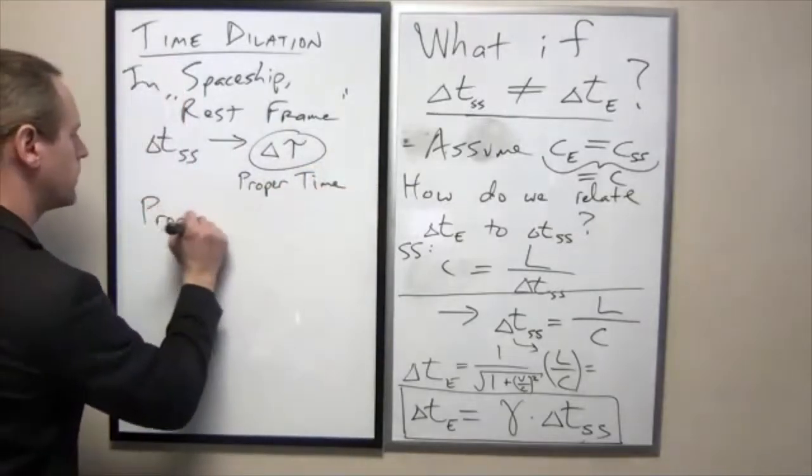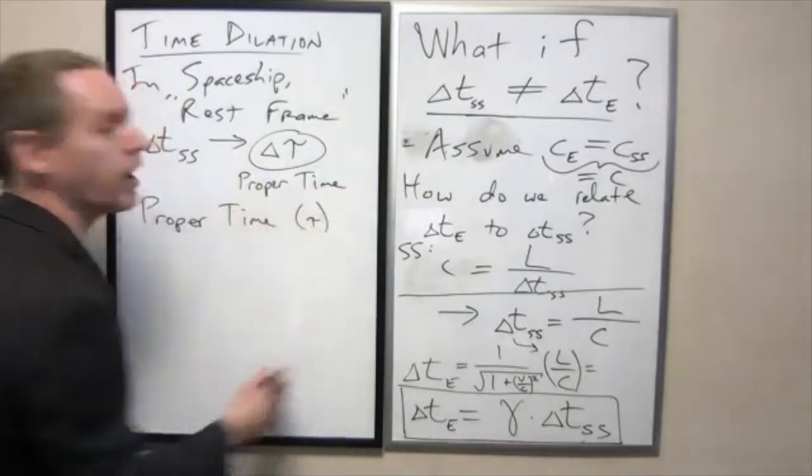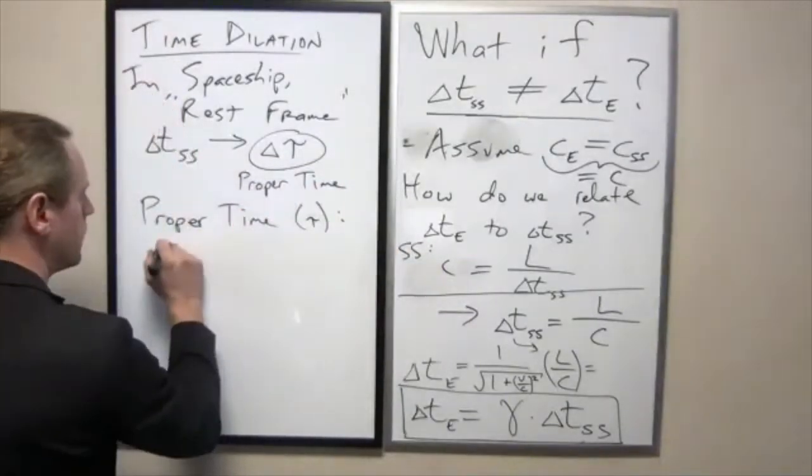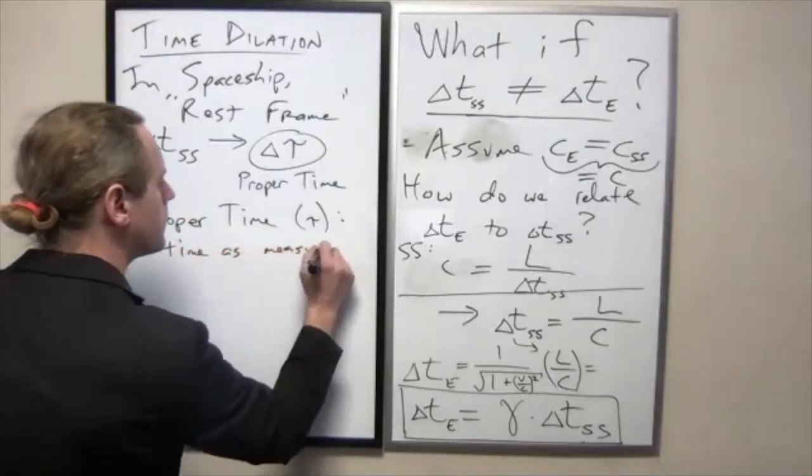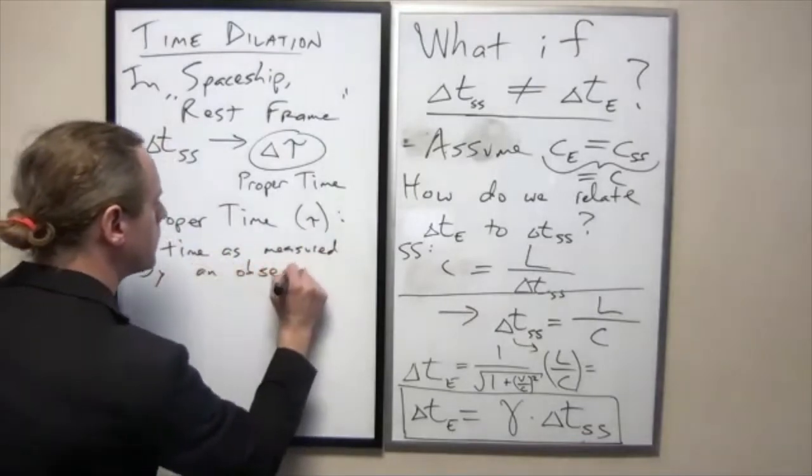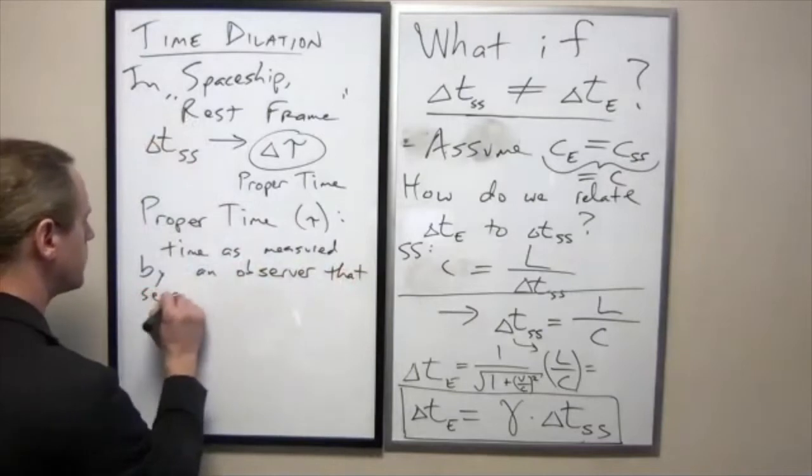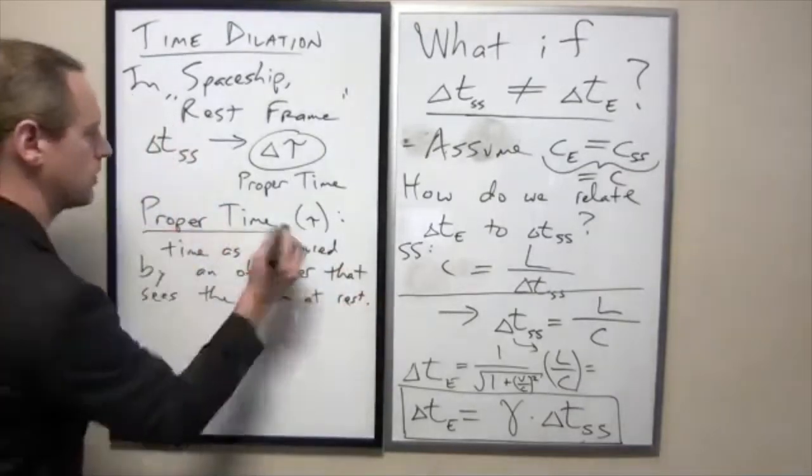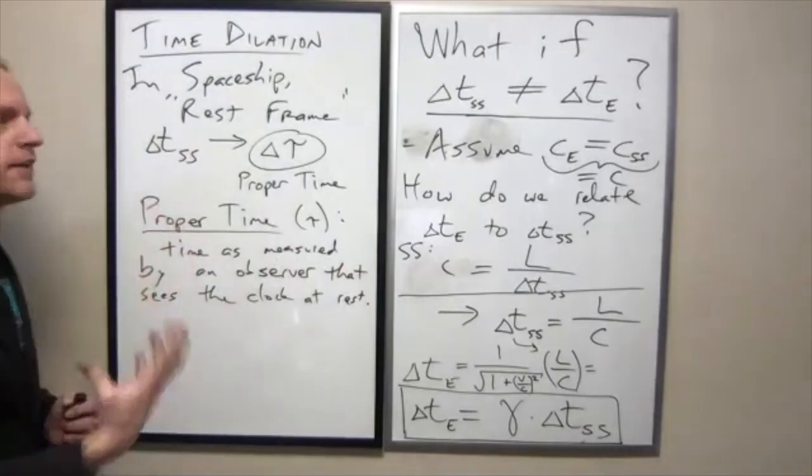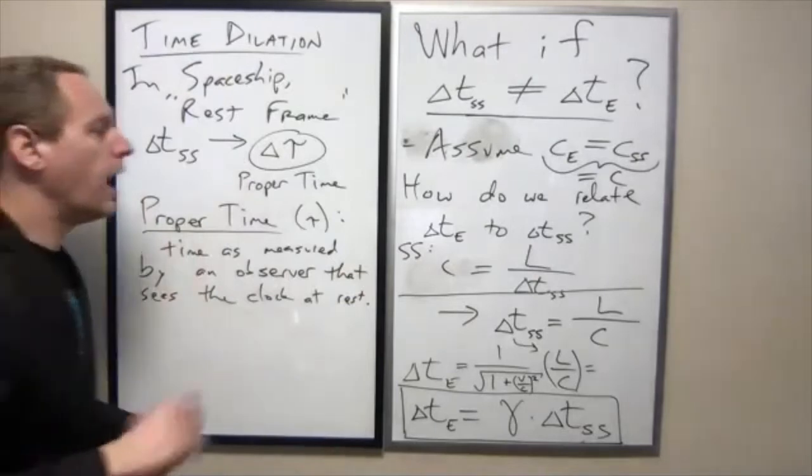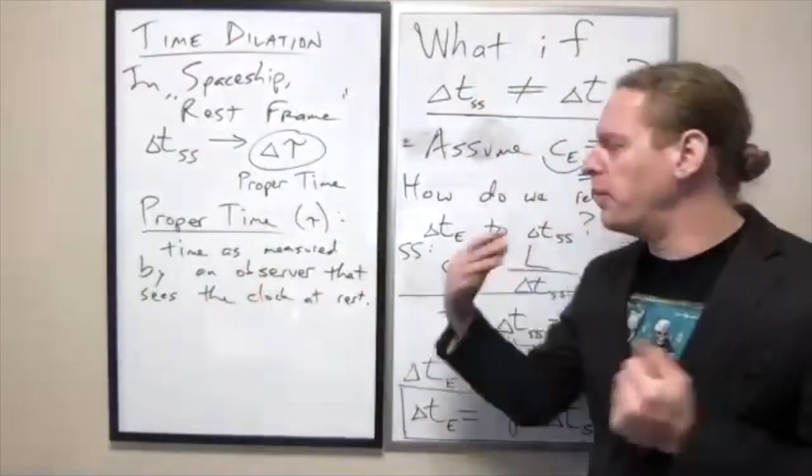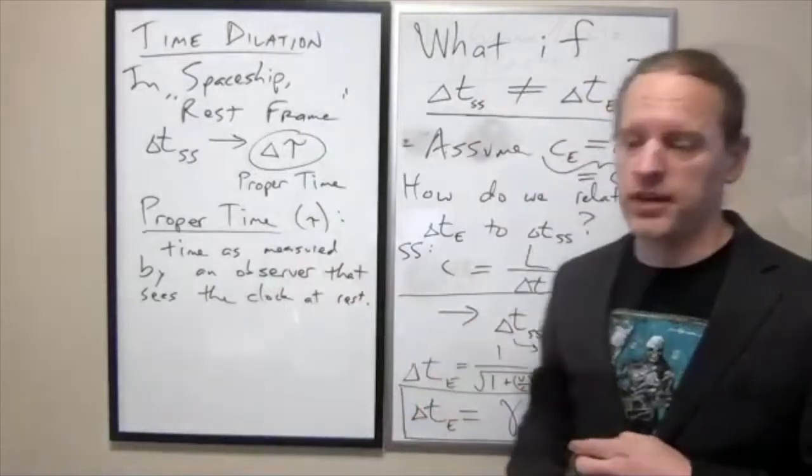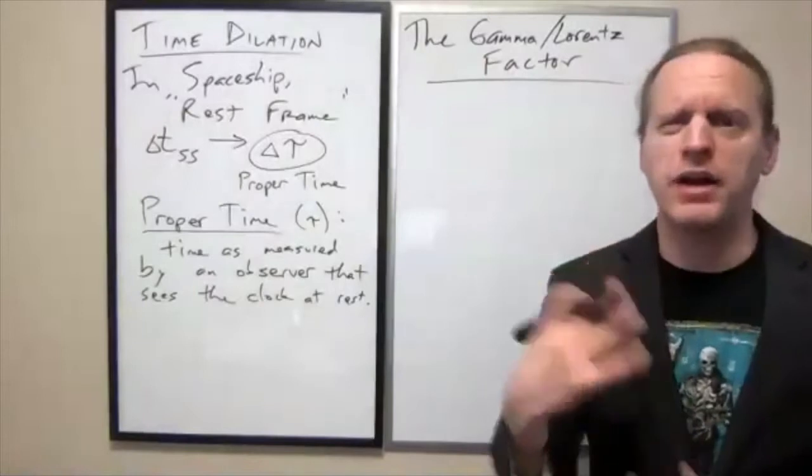Or in other words, proper time tau is exactly what is measured by an observer who does not see that clock moving. So that's essentially the definition. The proper time is how fast that spaceship observer sees time going compared with everyone else. And there's a very fundamental property of that proper time as it relates to the time that everyone else would see it going. So to do that, let's take a look at how gamma works here for a second. I do want to talk just real quickly about what that gamma factor relates to and how to actually calculate it.